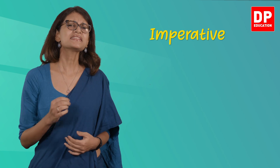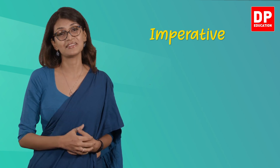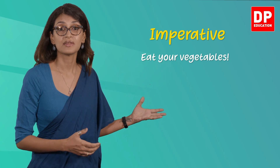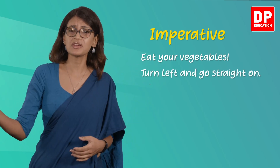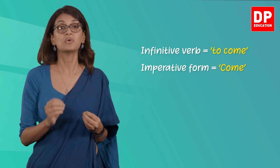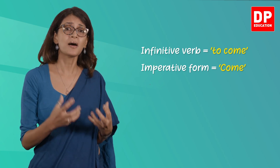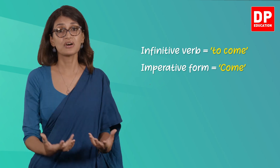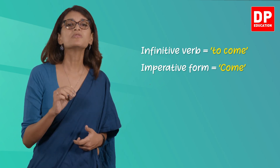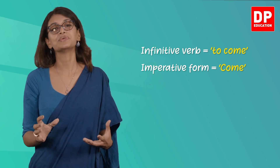Let's look at some phrases written in the imperative: eat your vegetables, turn left and go straight on. To make the imperative, use the infinitive of the verb without 'to.' For example, the infinitive of the verb 'come' is 'to come,' so when we transform it into the imperative we remove the 'to' and simply use 'come.' Here are some examples of verbs in the imperative: come here, sit down.